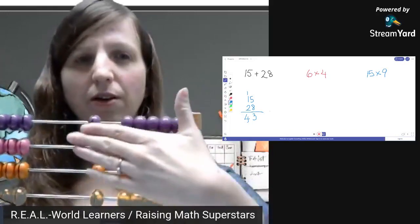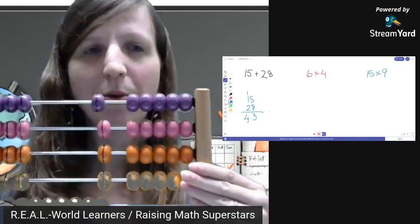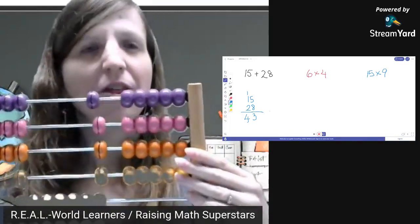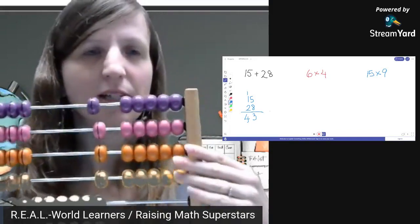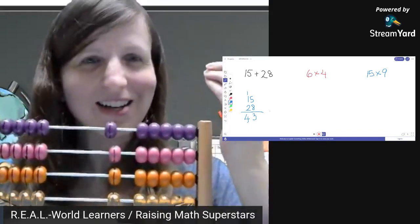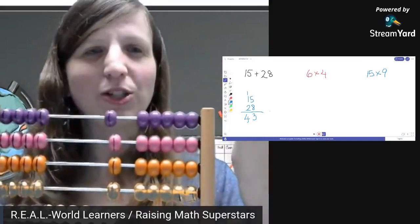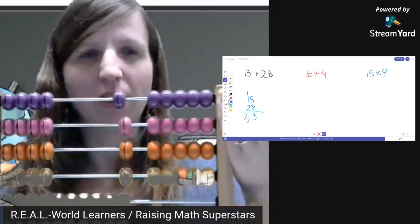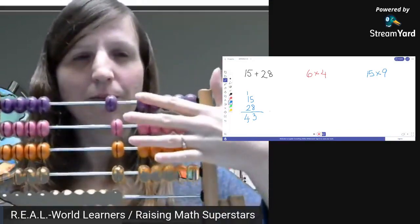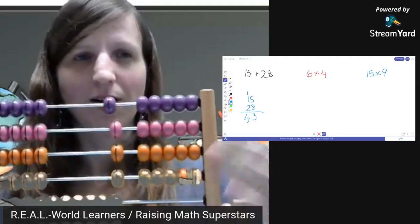So if they get to the point where they're visualizing all of this, they're not memorizing facts and answers. They're not even memorizing strategies. It's just a number sense. They get, they really build this intuition about what numbers are and how they work. So they see this and they're like 10, 20, and four, 24.